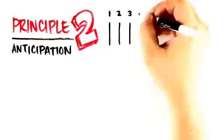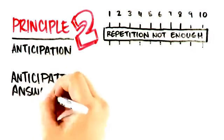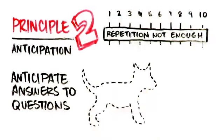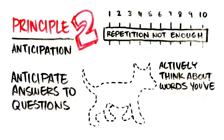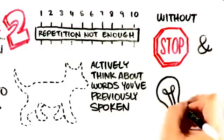Principle number two, is anticipation. Dr. Pimsleur discovered that repetition alone is not enough. You're required to anticipate answers to questions, which forces you to actively think about words you've previously spoken, without having the chance to stop and think.